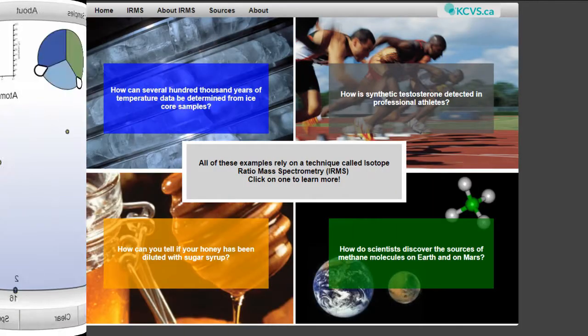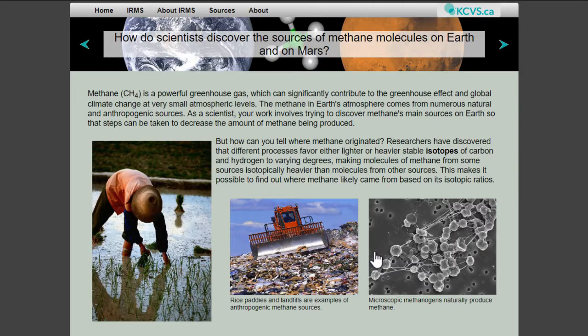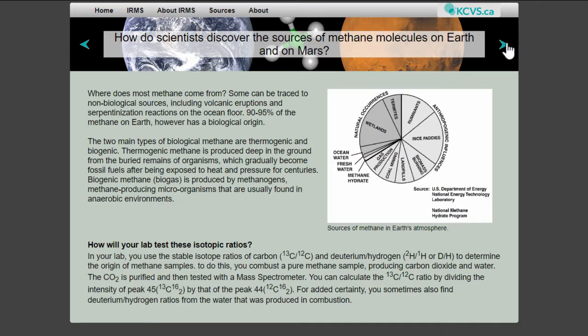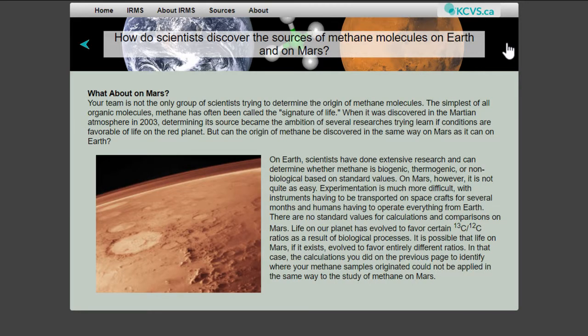The isotope ratio mass spectrometry applet has four mini-lessons to work through, each focusing on a different application of isotope science. For example, the case study on methane molecules on Mars discusses how scientists can determine the origin of methane molecules based on the ratios of isotopes in a sample. Because the mass of the molecules in methane depends on how the molecules are formed, the molar mass of a particular sample can indicate whether a given sample of methane had its origin in a meteor or a biological organism.